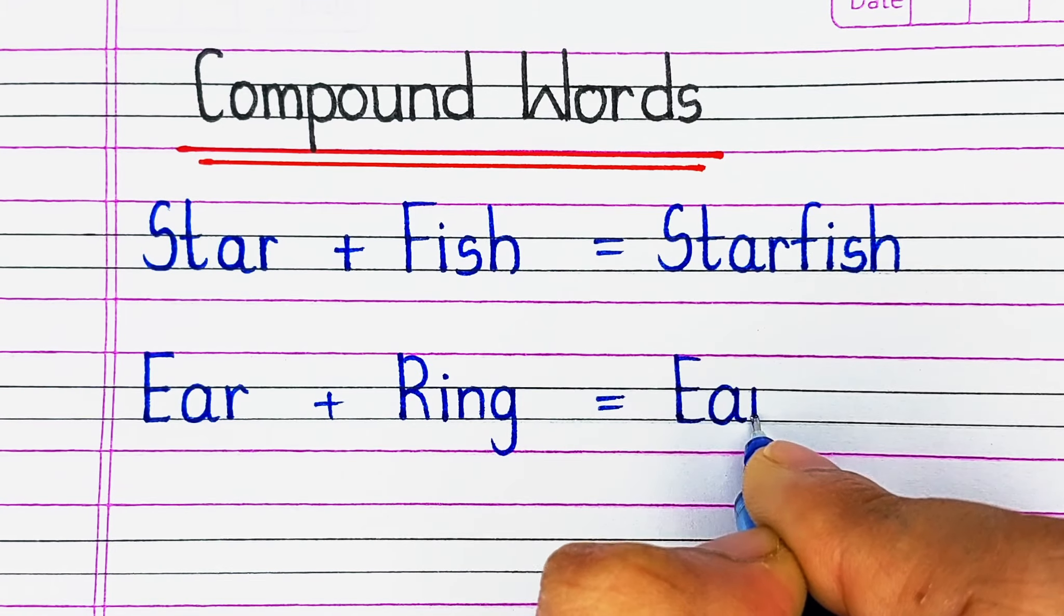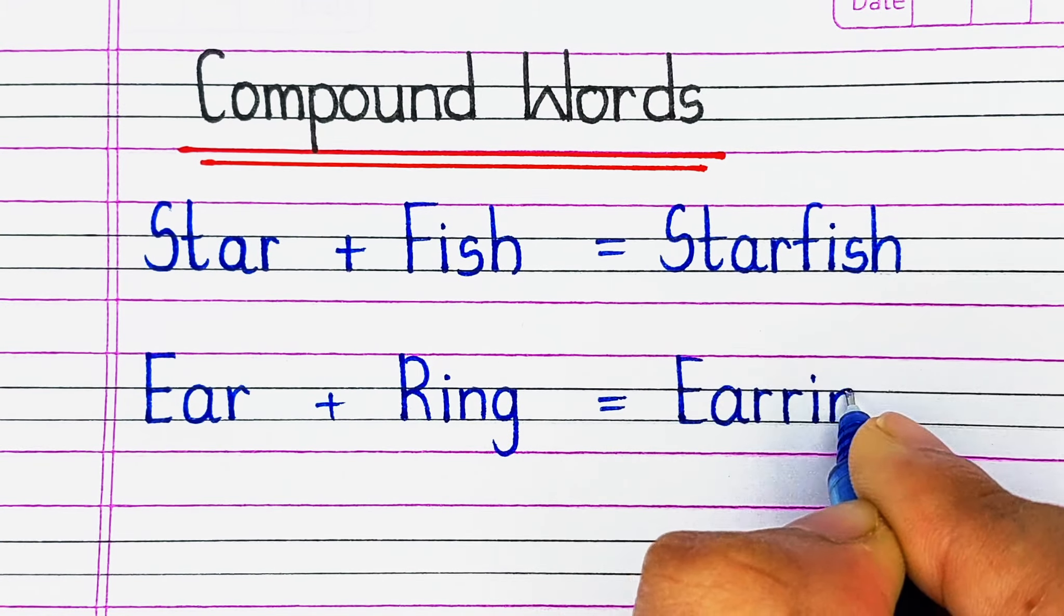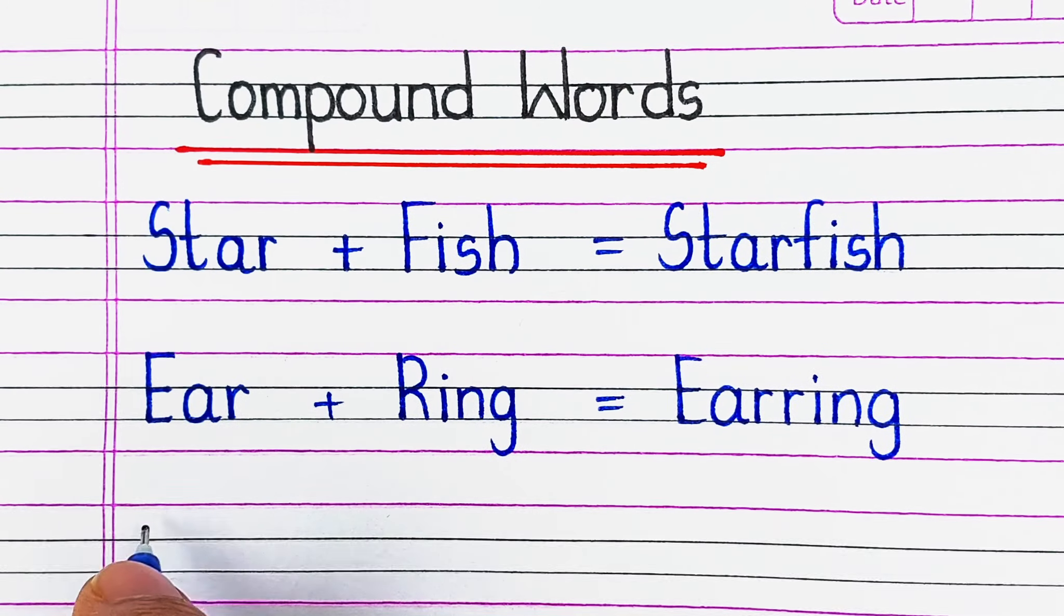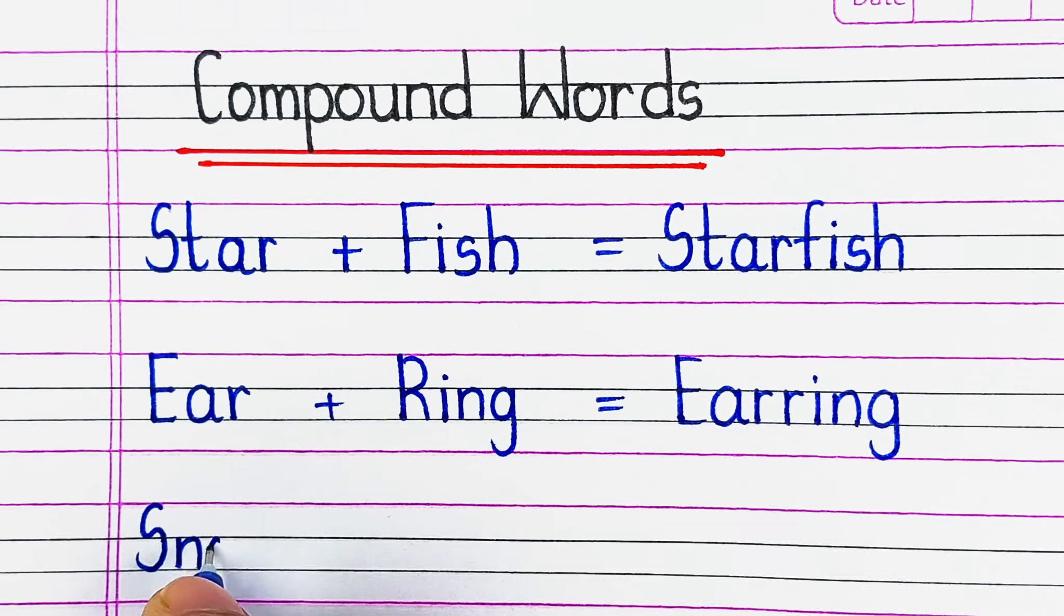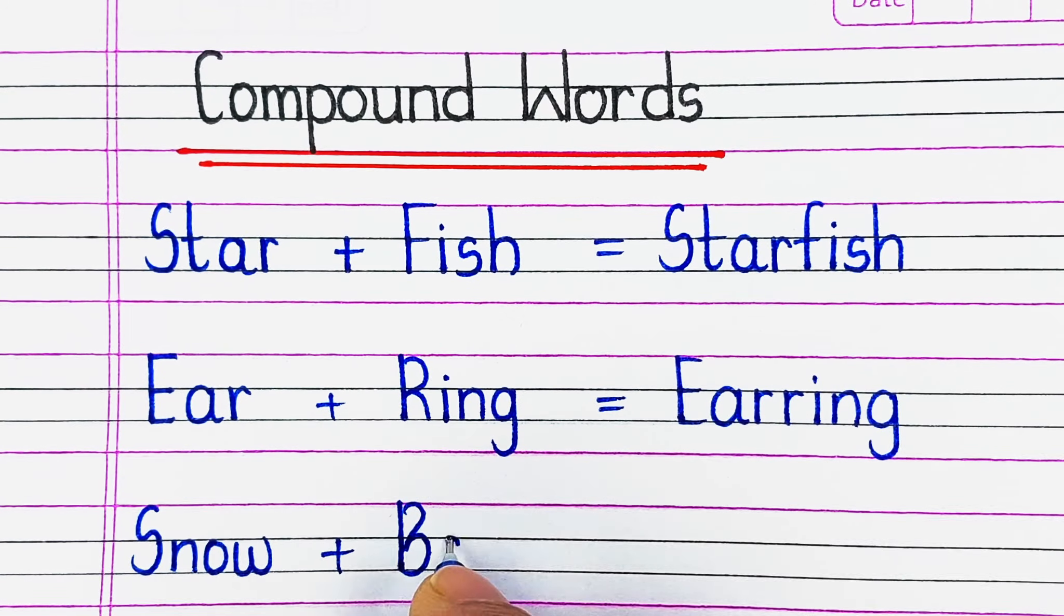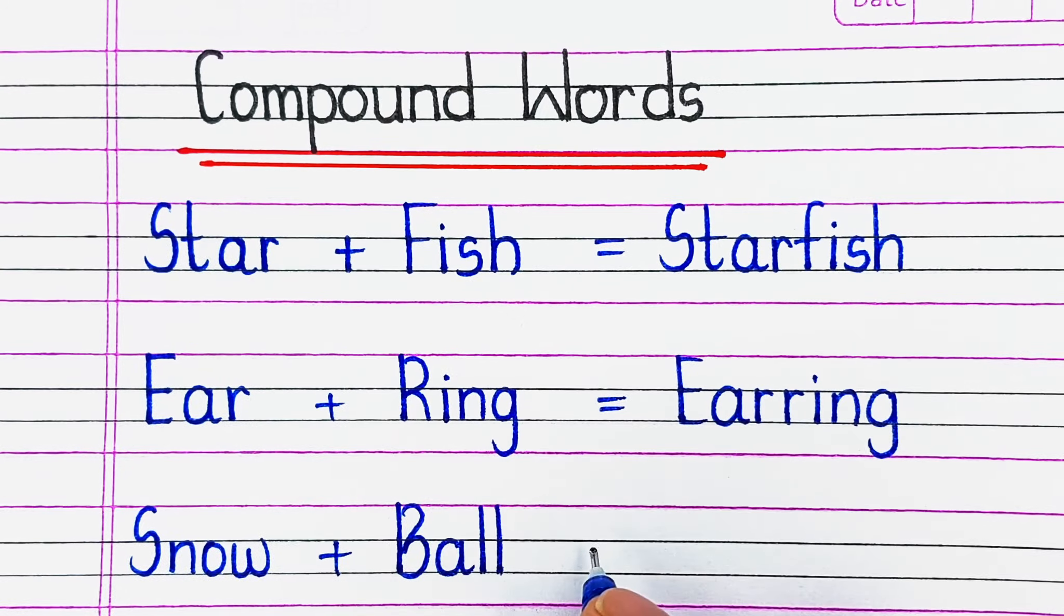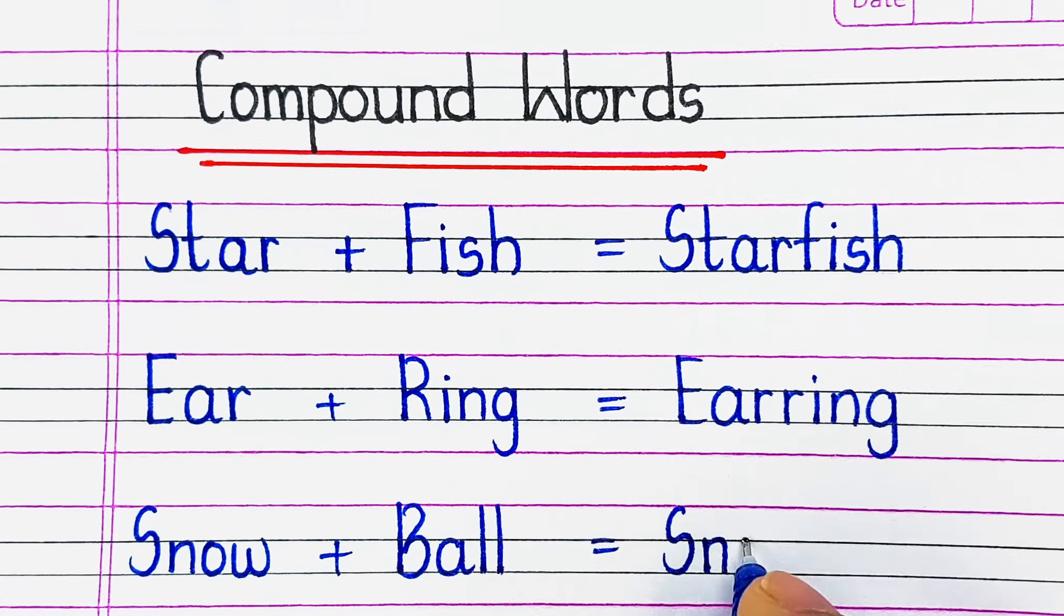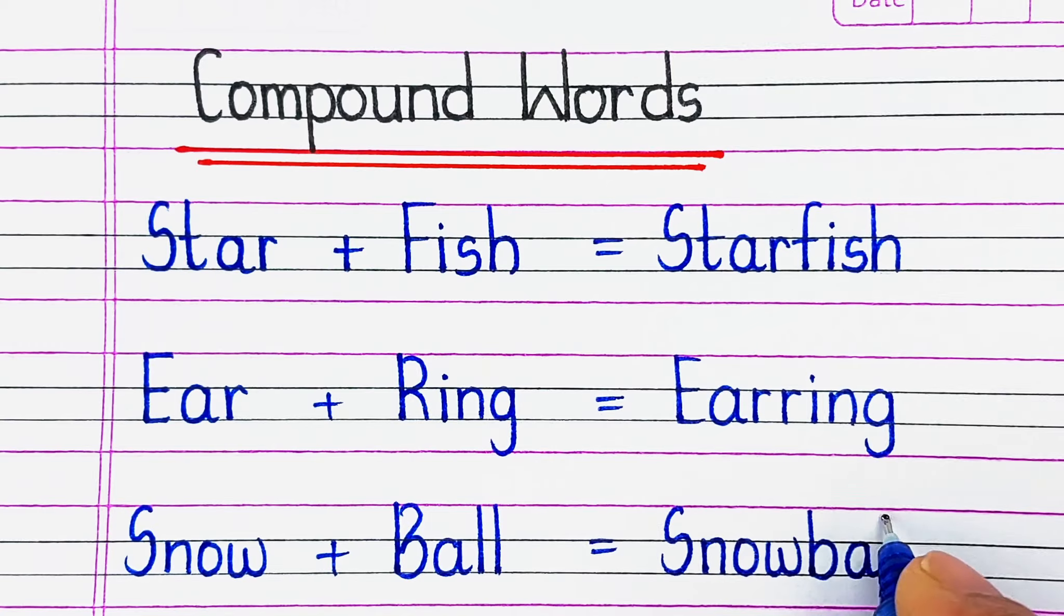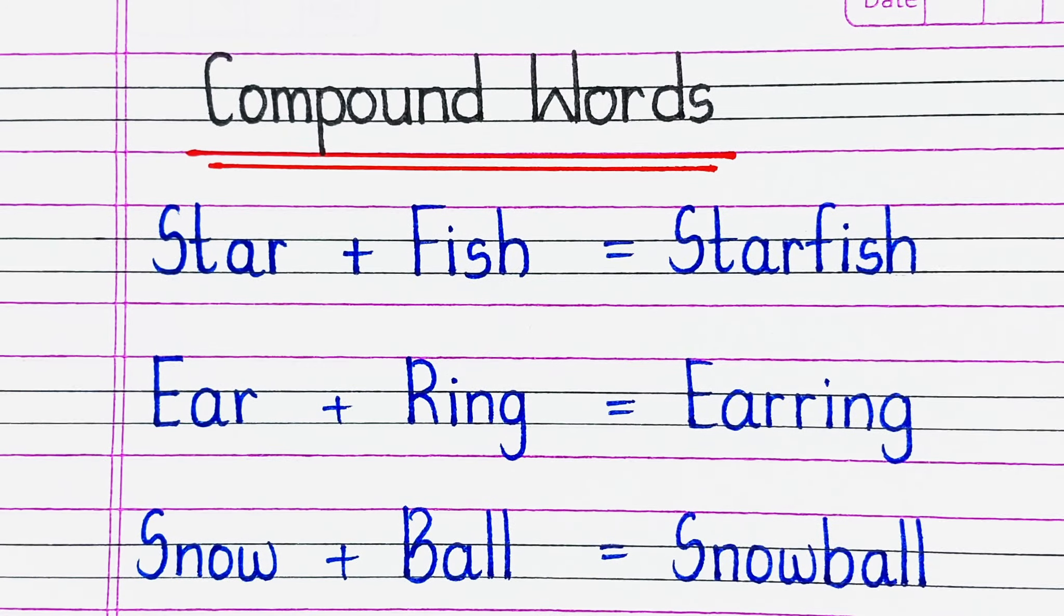In this video, we are going to discuss some examples of important compound words in English. First one is S-T-A-R star plus F-I-S-H fish, starfish. Next is E-A-R ear plus R-I-N-G ring, earring.